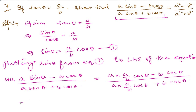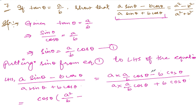Now we can take cos θ common from both numerator and denominator. Taking cos θ out from the numerator gives: a times a divided by b, which is a squared over b, minus b. And from the denominator: a squared over b plus b.